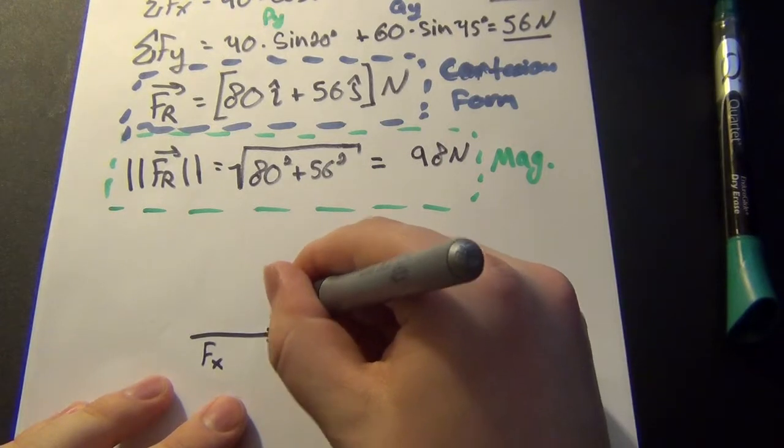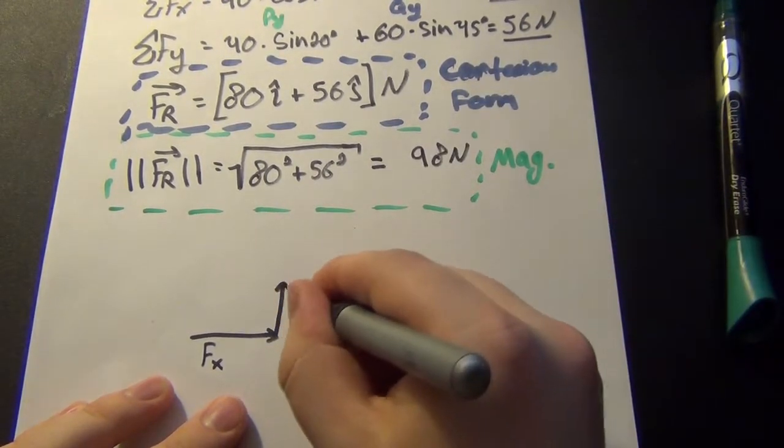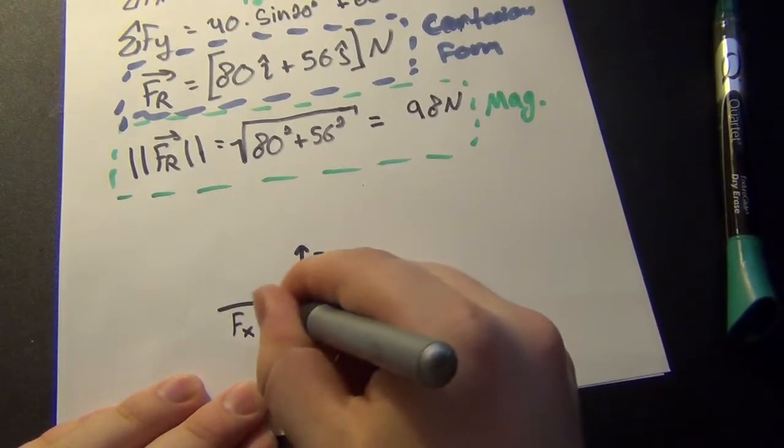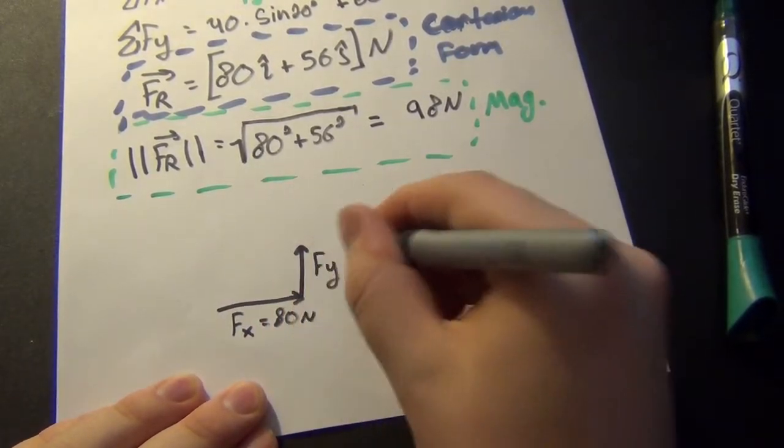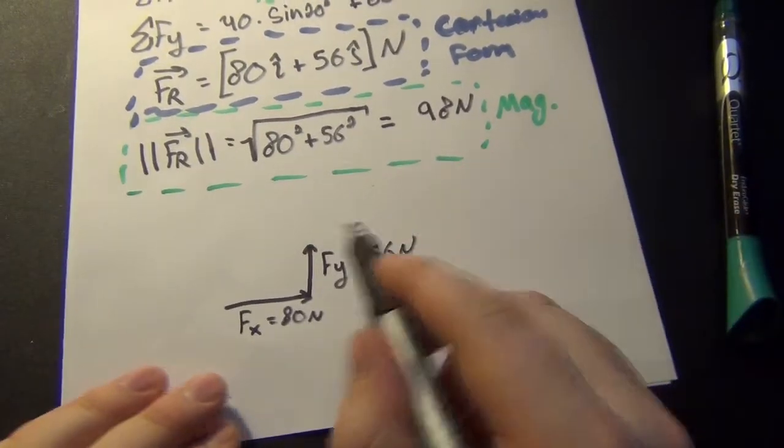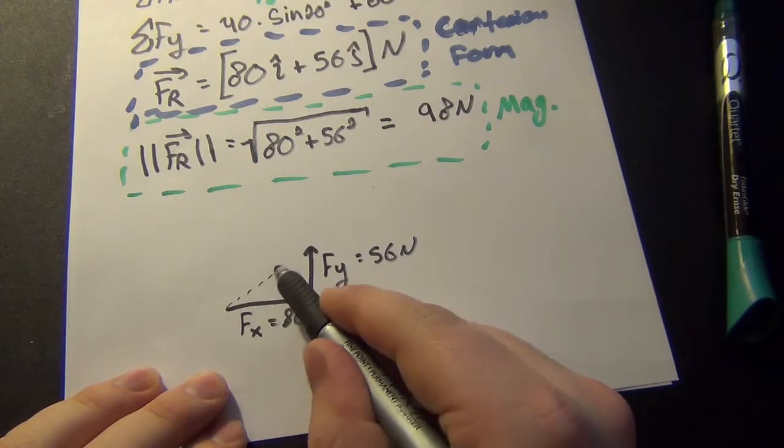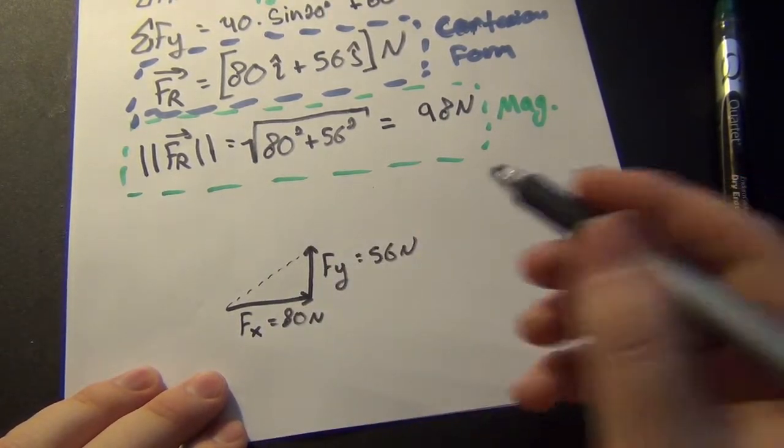And then just to draw the 56 Newtons going vertically. It's slightly smaller than 80, so this is going to be F of Y. I guess I'll label these, 80 Newtons equals 56 Newtons up here. And then, so basically the resultant force is just this, this guy right here. And what is this equal to? So we, this is a 90 degree angle.